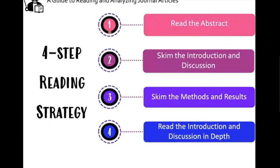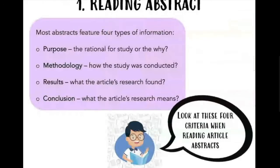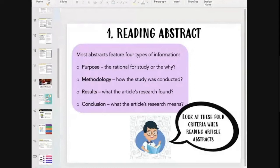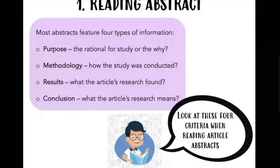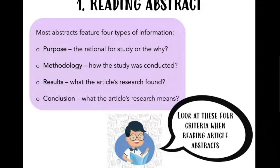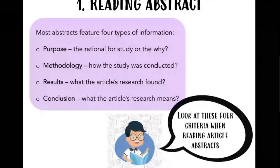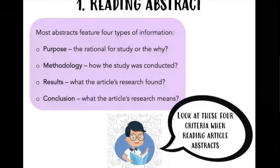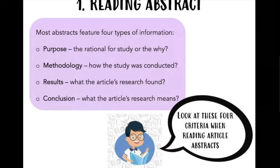You can skim all those parts and read the introduction and discussion very deeply, then go back to check whether the article is reliable or related to your study, and extract the information. This is just a suggestion for your reading strategy. When reading the abstract, note that most abstracts — even in one paragraph — should contain the purpose, methodology, result, and conclusion of the study. You need to look at these four criteria to assess the rationale, how the study was conducted, what the research found, and what the findings mean.